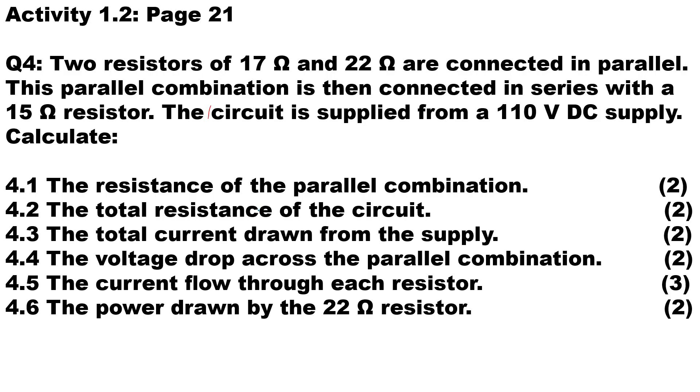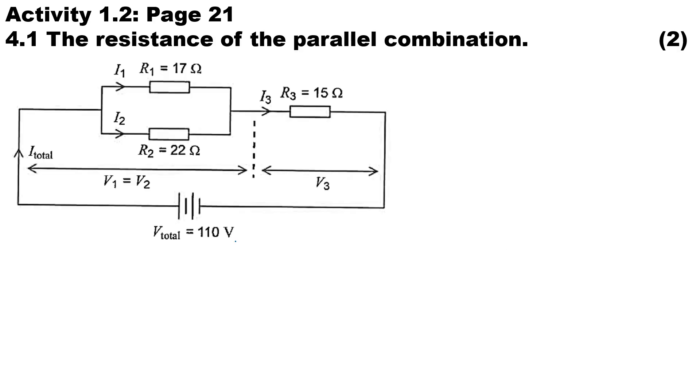In this question, two resistors of 17 ohms and 22 ohms are connected in parallel. This parallel combination is then connected in series with a 15 ohm resistor. The circuit is supplied from a 110 volt DC supply, and we have six questions that we need to answer. So I've gone ahead and drawn the diagram.